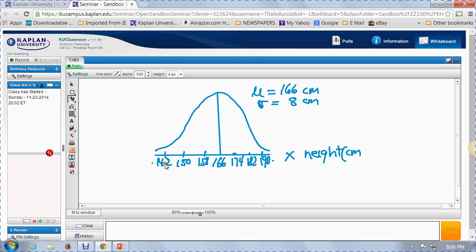We know from the empirical rule, for example, that almost all of the women, 99.7% of them, are between 142 centimeters tall and 190 centimeters tall. We also know, using the empirical rule, that 68% of the women are between 158 inches tall and 174. That's easy because the numbers we're interested in are the standard deviation that we already have down there.